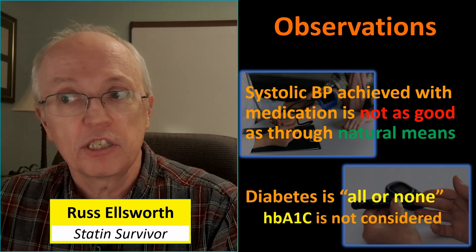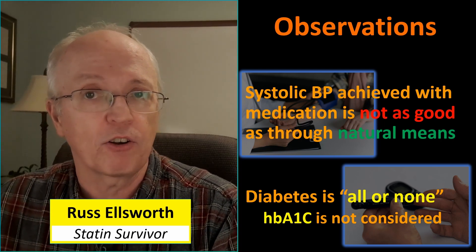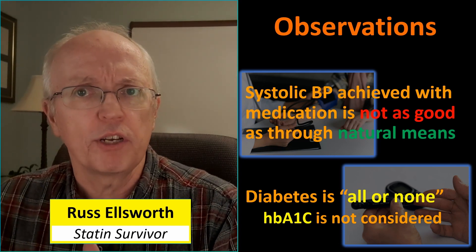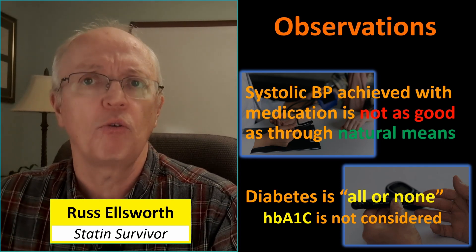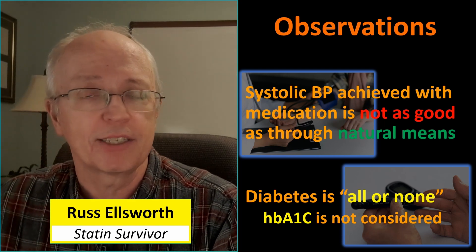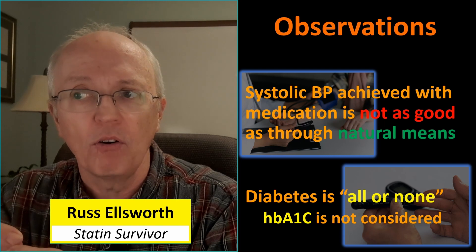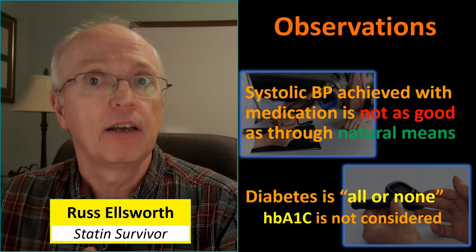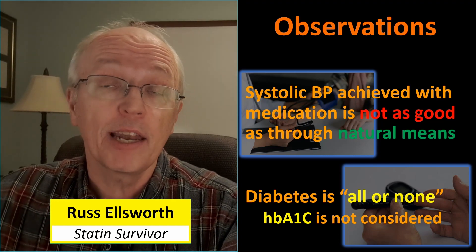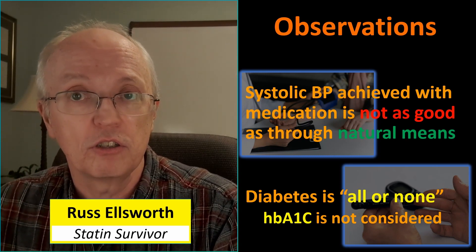Diabetes in these equations is considered all-or-none — they don't consider HbA1c readings. Diabetes is diagnosed when HbA1c is 6.5 or greater; if it's 6.4, you don't have diabetes. But diabetes doubles your risk — I looked at one data set where risk was about 12%, and adding diabetes popped it up to 25%. You're not going to cut your risk in half by dropping from 6.5 to 6.4 HbA1c. An HbA1c of 5 is very different from 6.4, and someone at 10 is obviously higher risk than someone at 6.5 — but the equations don't take that into account. It's a yes/no thing.